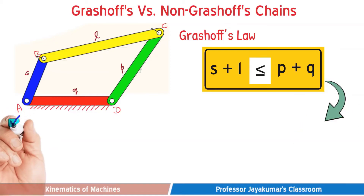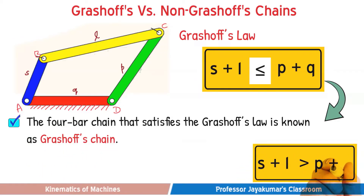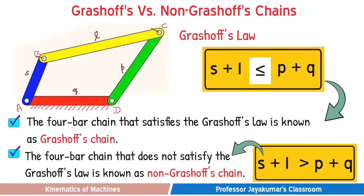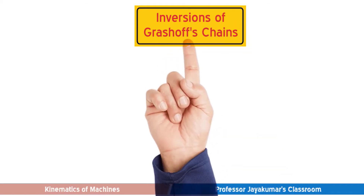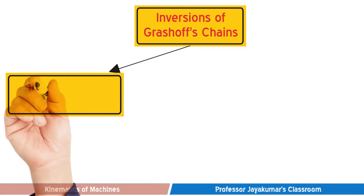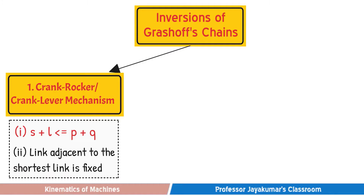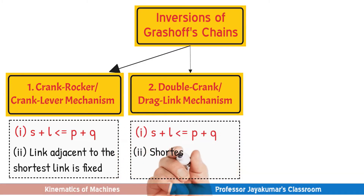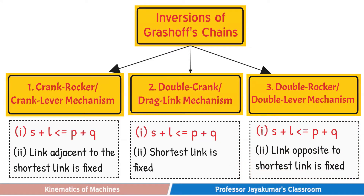If a 4-bar chain satisfies Grasov's law, that chain is known as a Grasov's chain. If it does not satisfy Grasov's law, it is called a non-Grasov's chain. In a Grasov's chain, based on the link which is fixed, we have three inversions: Crank-Rocker (also known as Crank-Lever mechanism), where the link adjacent to the shortest link is fixed; Double Crank (also known as Drag-Link mechanism), where the shortest link is fixed; and Double-Rocker (also known as Double-Lever mechanism), where the link opposite to the shortest link is fixed.